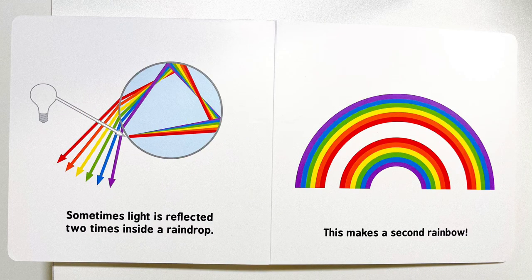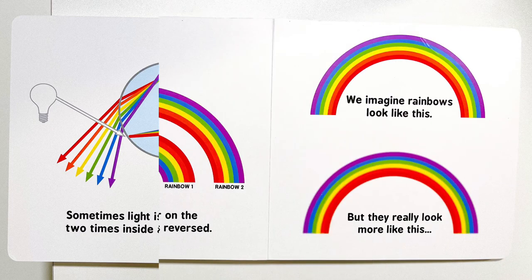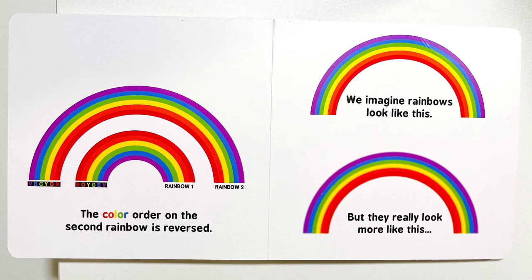Sometimes light is reflected two times inside a raindrop. This makes a second rainbow. The color order on the second rainbow is reversed.